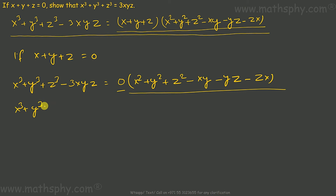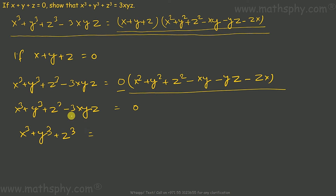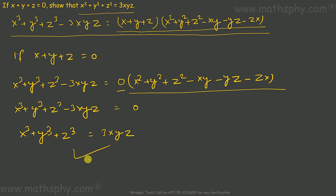So x cube plus y cube plus z cube minus 3xyz equals 0, which means x cube plus y cube plus z cube equals 3xyz — the negative goes to this side and becomes positive 3xyz. So if x plus y plus z is 0, x cube plus y cube plus z cube will be equal to 3xyz. That's what we have shown.